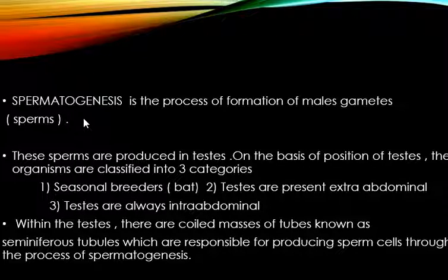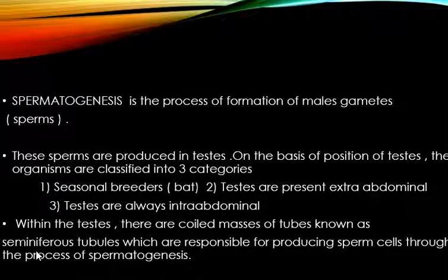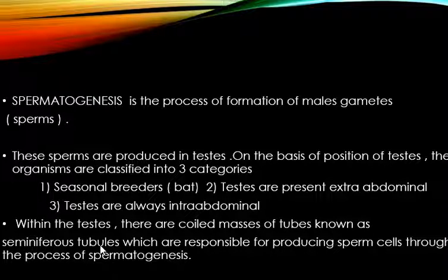Ab hume yeh toh pata chal gaya ki spermatogenesis kya hoti hai — yeh sperms ki formation hai — aur different positions ki basis pe organisms ko kaisi classify kiya jaata hai. But within the testes, kaunsi particular location hoti hai jahaan par sperm cells ki formation hoti hai? That is the seminiferous tubules. Yani ki testes ke andar ek coiled mass present hoti hai tubes ka, jise hum seminiferous tubules kehte hain. Yeh woh exact location hai jahaan sperm cells produce hoti hain through spermatogenesis.